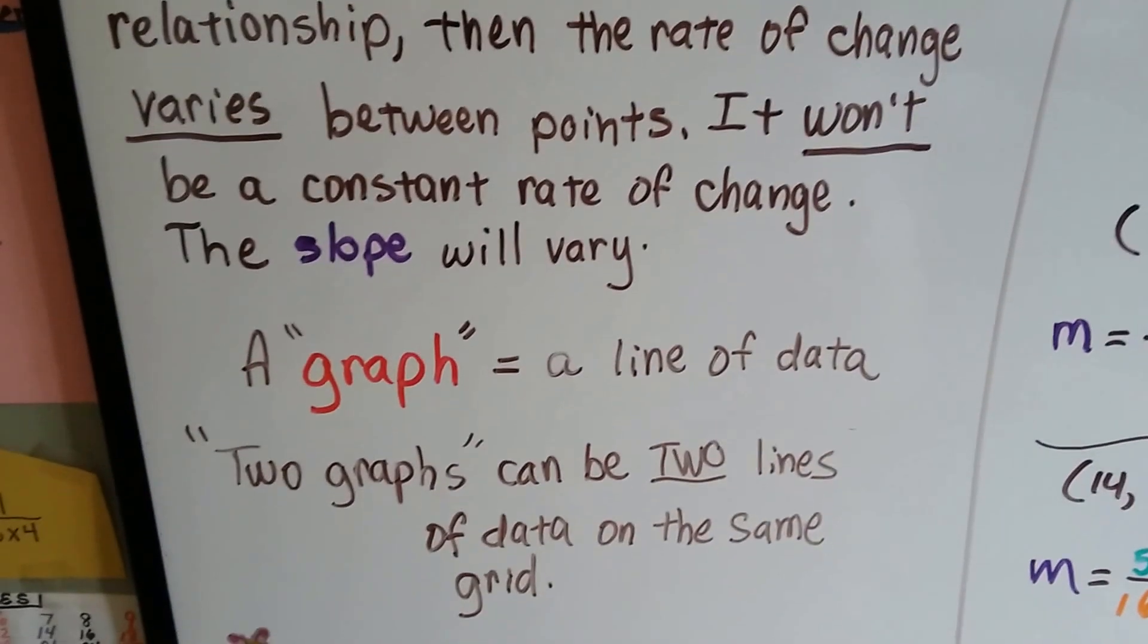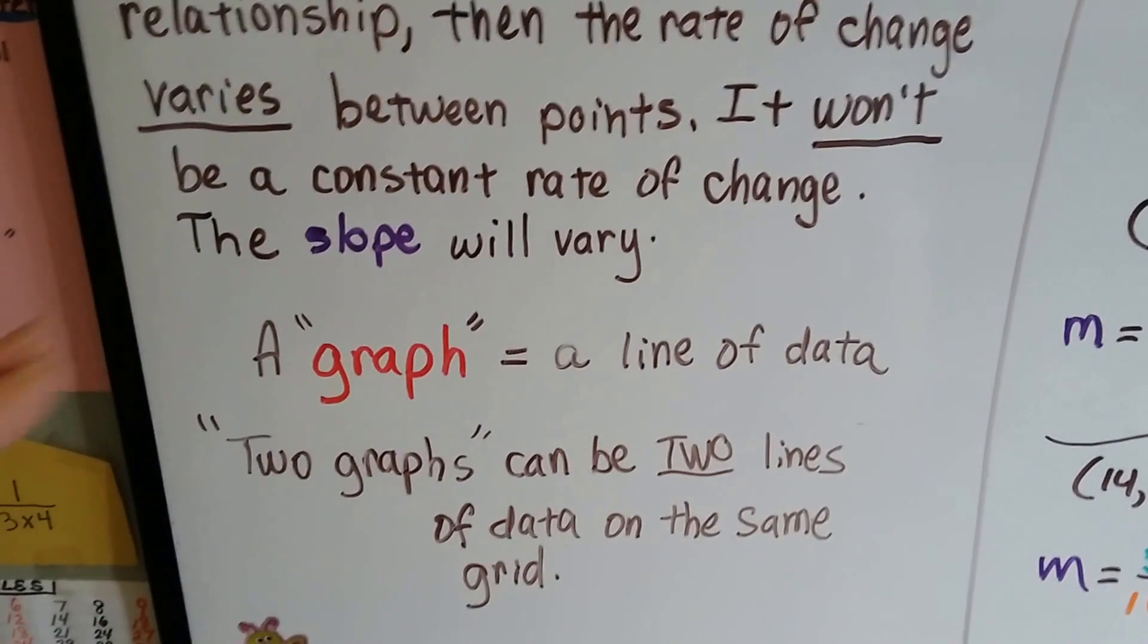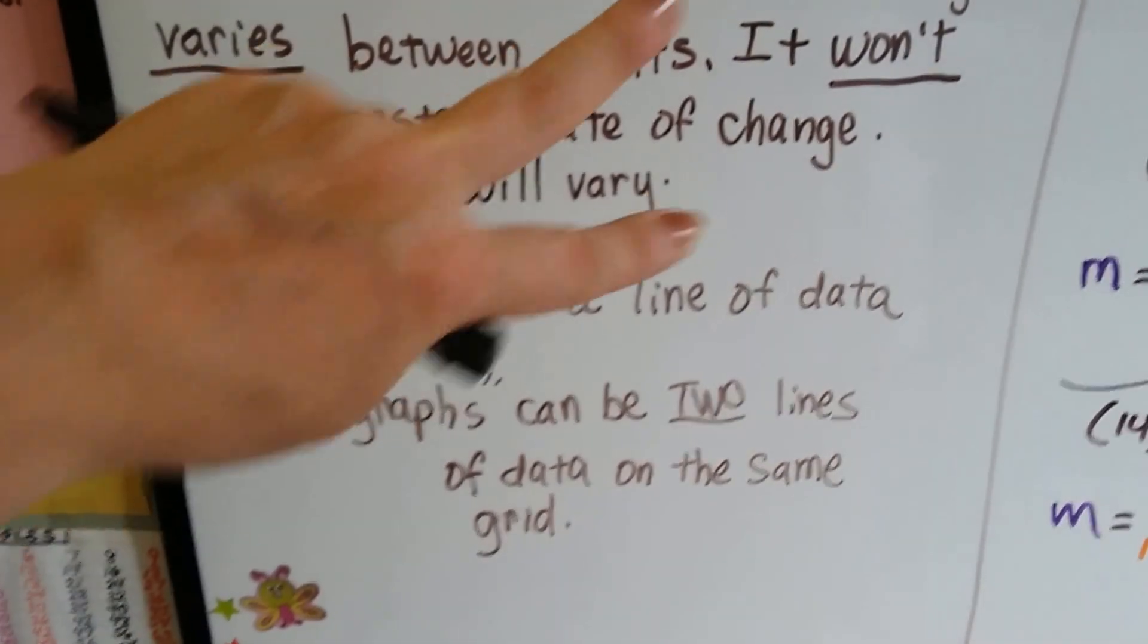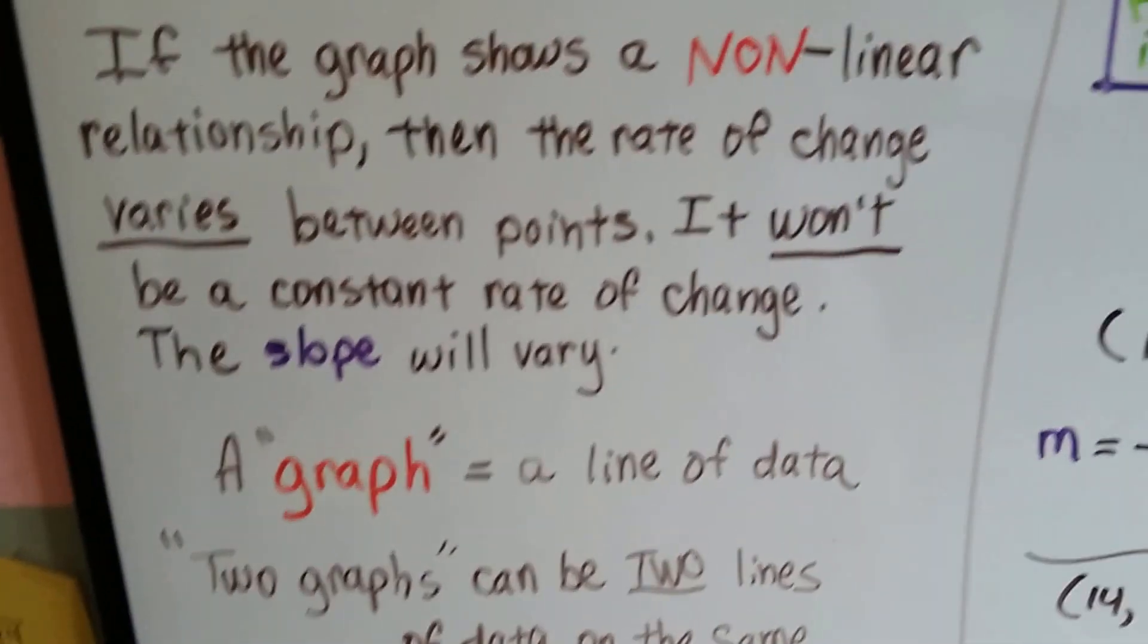If it says a graph, it probably means one line of data. If it says two graphs, that could be two lines of data on the same grid, on the same coordinate plane.